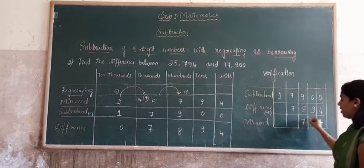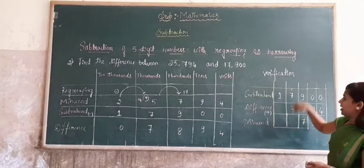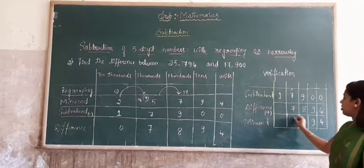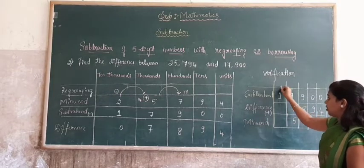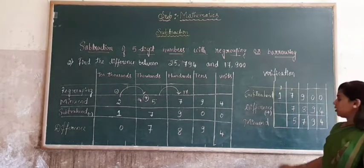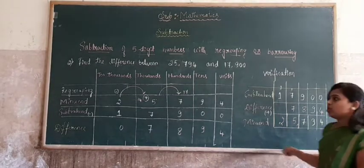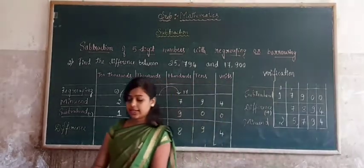4 plus 0 equals 4. 9 plus 0 equals 9. 8 plus 9 equals 17, carry 1. 7 plus 7 equals 14 plus 1 equals 15, carry 1. 1 plus 1 equals 2. We get 25,794. So our final answer is right.